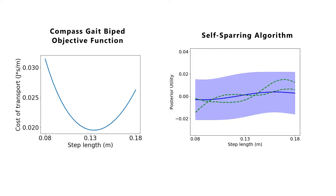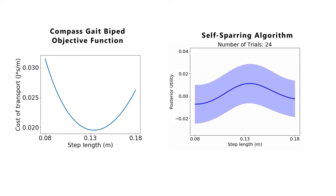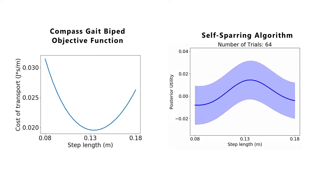Two samples are drawn from this posterior to obtain a new pairwise preference. This process repeats and the posterior utility model converges towards a peak at the optimal cost of transport.